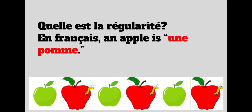Peut-être que vous avez dit pommes vertes, pommes rouges avec un ver de terre. Ver de terre, that means an earthworm. Pommes vertes, pommes rouges avec un ver de terre. Green apple, red apple with an earthworm. Green apple, red apple with an earthworm. Green apple, red apple with an earthworm.